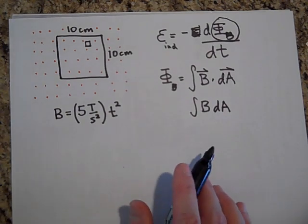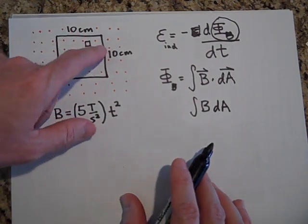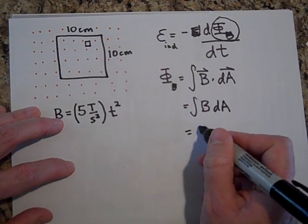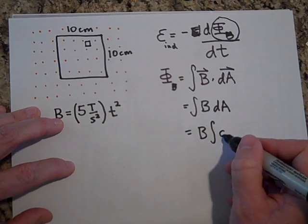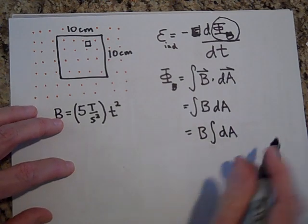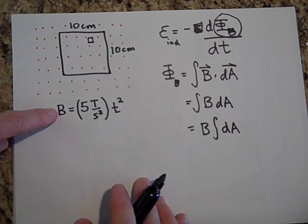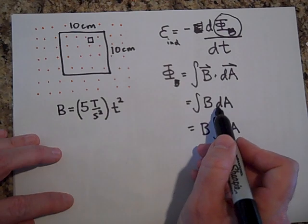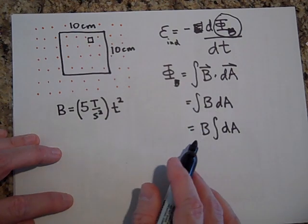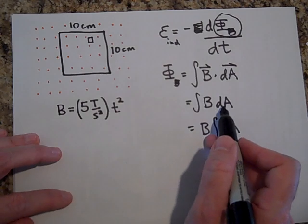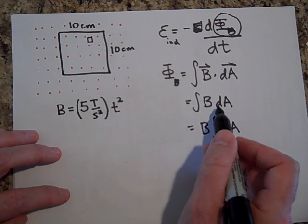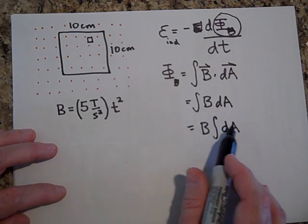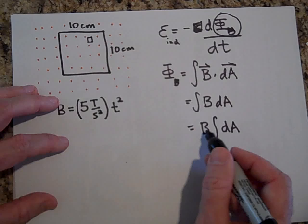Now, B is the same at all locations. And so, because it's the same at all locations, I can pull it out of the integral. Now, you might say, well, wait a second, isn't it changing with time? And you'd be right. The B is not constant, but it is uniform. If this were a dT instead of a dA, I would not be able to pull that B out of the integral. But because it's a dA, that means that that's with respect to location. And so as long as the B doesn't change with location, meaning that it's uniform, then I can pull it out of the integral.